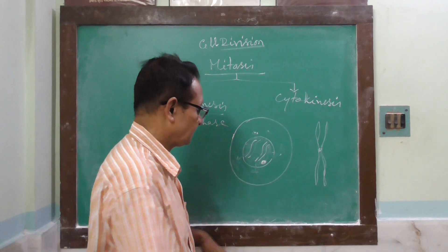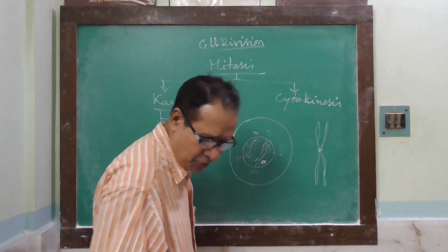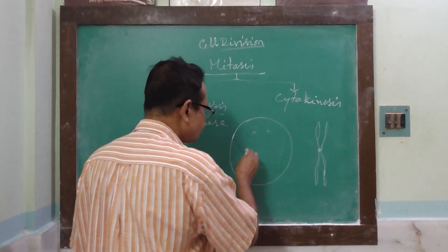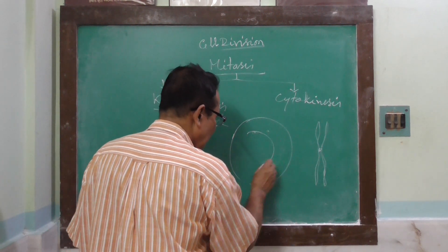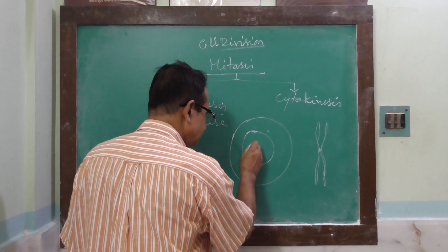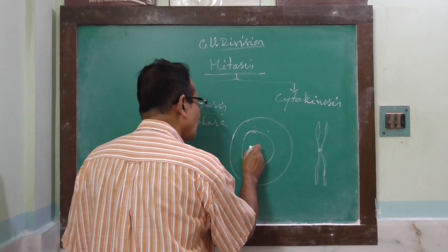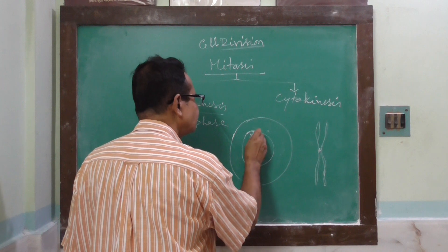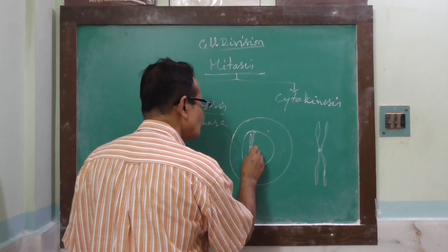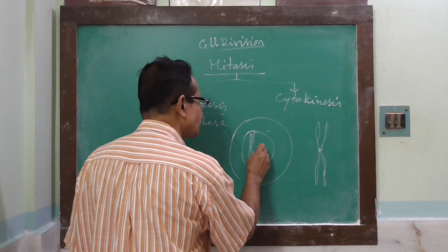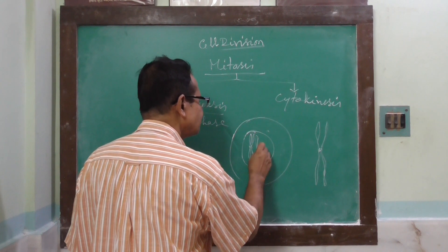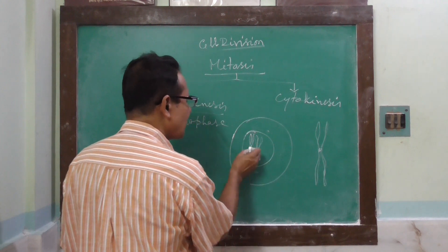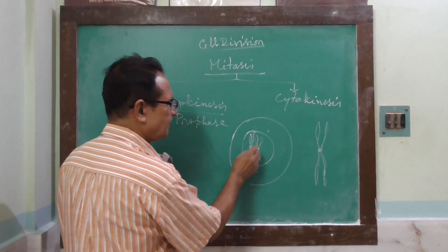Third point: each chromosome longitudinally splits up into two chromatids, except at a point called the centromere.